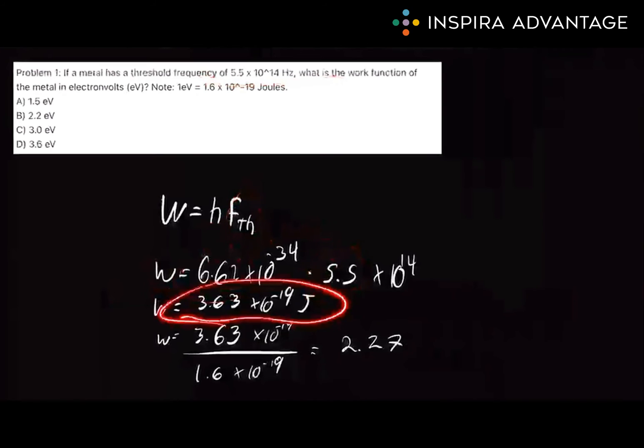Doing this math out, we get 3.63 times 10 to the negative 19th joules. And like I said, joules can't be our answer, right? So we're going to take this, convert it into electron volts by dividing by 1.6 times 10 to the negative 19th. And luckily, since these are the same, we can pretty much just ignore it. Say we take 3.6 divided by 1.6. That's a bit more than 2. Turns out to be exactly 2.27. And luckily, only one answer is close enough there, and it is answer choice B. So that's how we pick it on the MCAT.